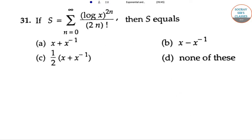If S is equal to the sum from n equals 0 to infinity of (log x)^(2n) divided by (2n) factorial, then S equals what? The options are: x plus x to the power minus 1; x minus x to the power minus 1; half into x plus x to the power minus 1; and none of these.